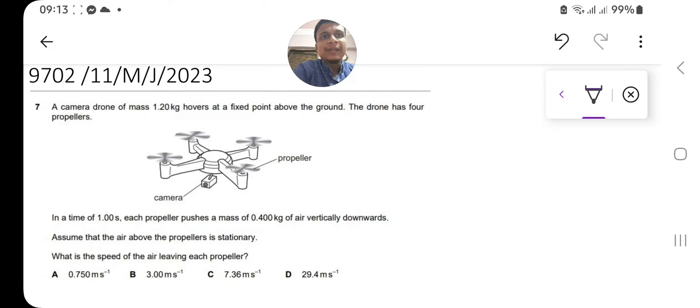Hello, assalamu alaikum dear students. Today we are here with Paper One Physics June 2023, question number seven. It is about drones, a very new technology. However, the technology goes on but the laws of physics remain the same. This is basically a question of momentum.